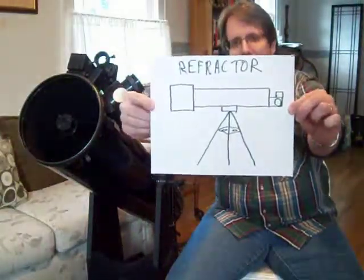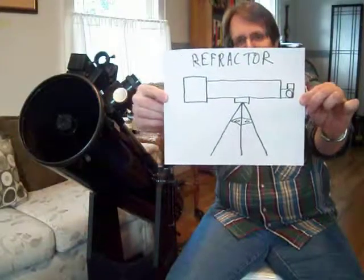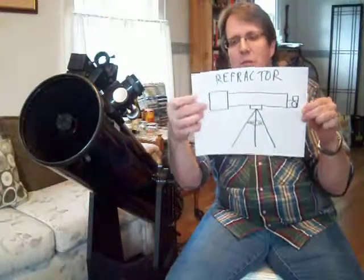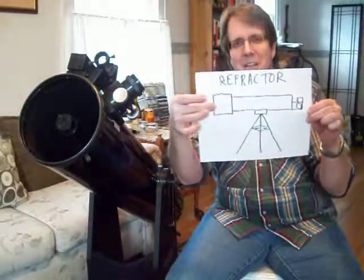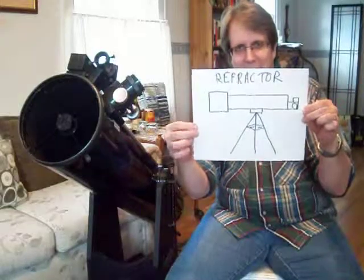I'm going to jump right into this. What are the different types of telescopes? Well, there's really essentially two. This is the one that most people commonly think of when they think of a telescope. This is a refractor, and it looks like that. It's usually mounted on a tripod. You can tell a refractor is a refractor when you look in the end here, the end of the tube, and you see lenses in there. So that's how you can tell if it's a refractor.